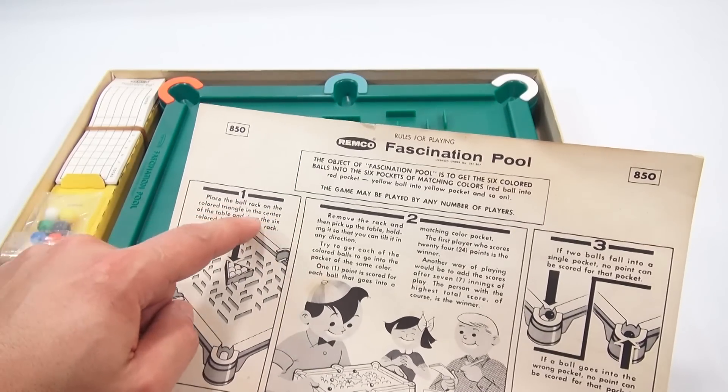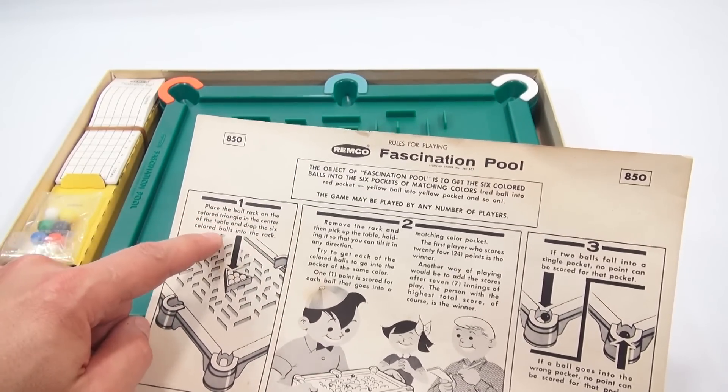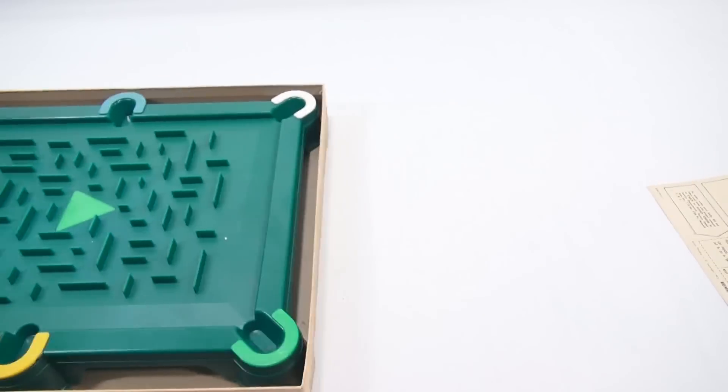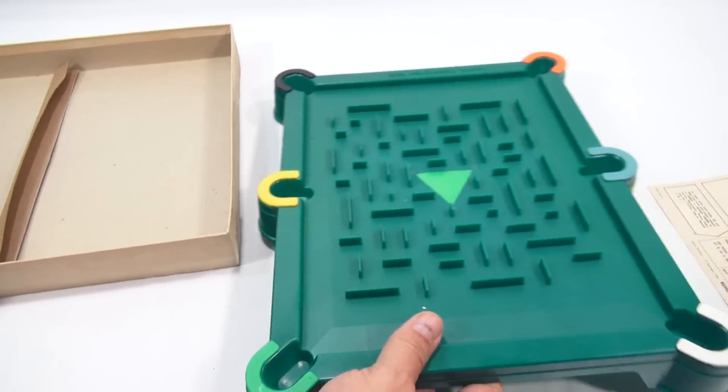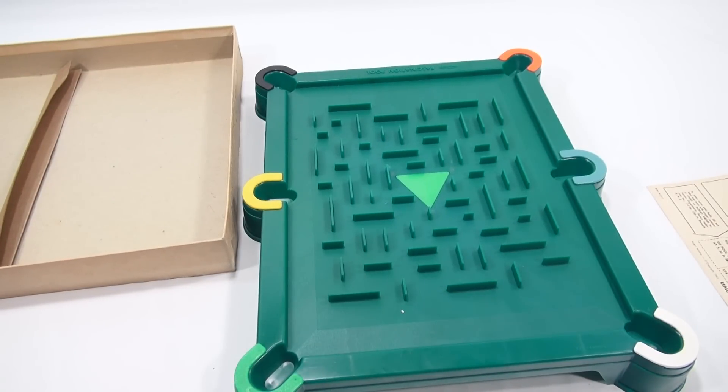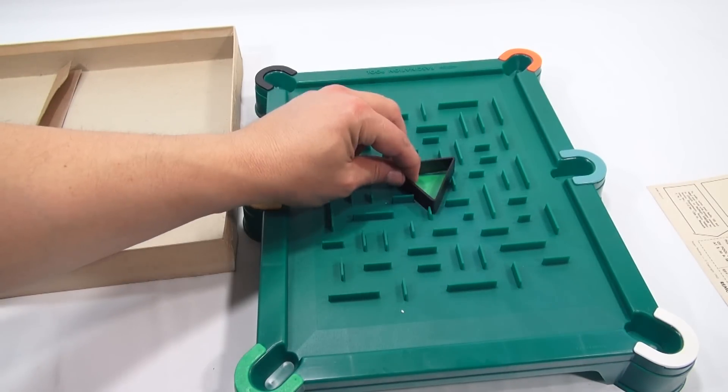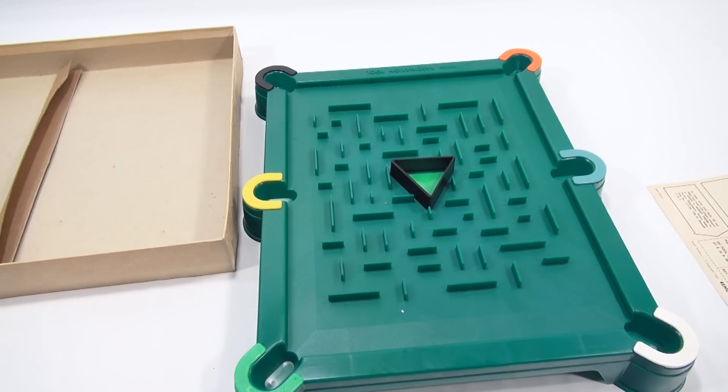Place the ball rack on the colored triangle in the center of the table and drop the six colored balls into the rack. All right, let's just do it. I've played it so I know it's fun.